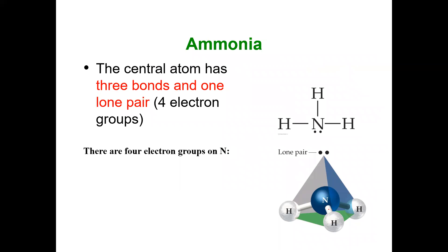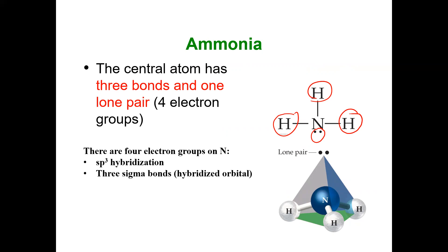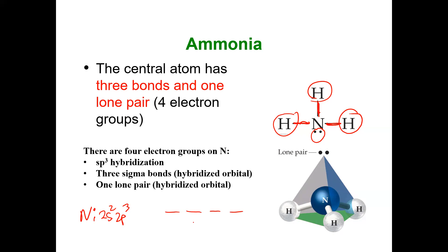Ammonia has four electron groups — three atoms plus one lone pair — giving sp3 hybridization with three sigma bonds and one lone pair. Nitrogen is in group 5A with electron configuration 2s2 2p3. When hybridized, I get four sp3 orbitals. With five valence electrons: three are unpaired for the three sigma bonds with direct internuclear overlap, and two form the lone pair in the fourth sp3 hybridized orbital.